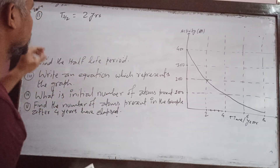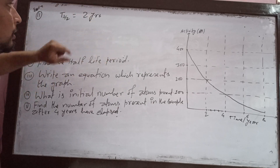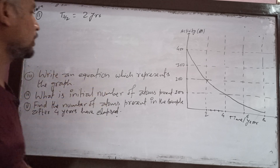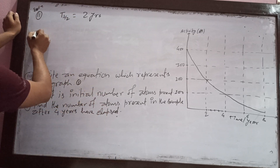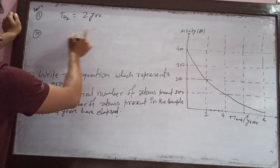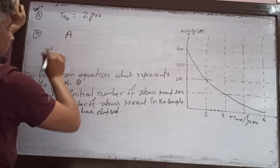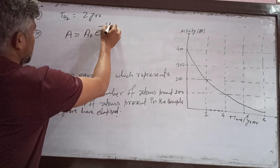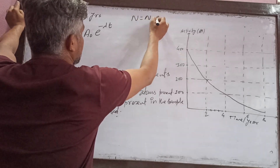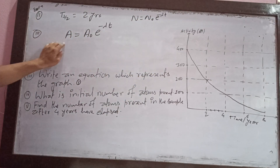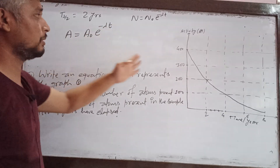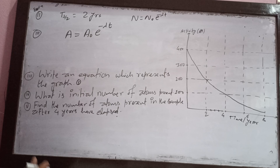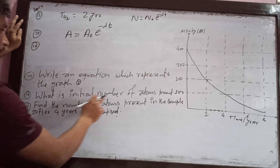Now, question three: write an equation which represents the graph. The equation is activity A is equal to A-naught times e to the power of minus lambda t. Similarly, N is equal to N-naught times e to the power of minus lambda t. Because exponential decay occurs, A equals A-naught e to the power of minus lambda t best represents this graph.